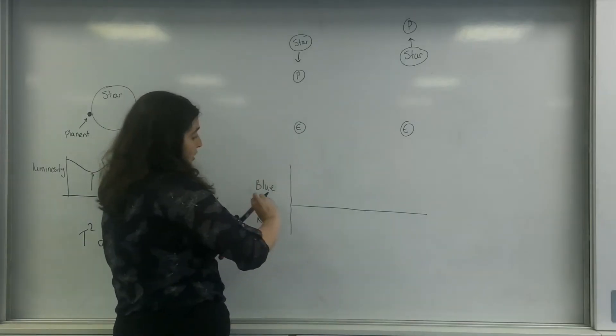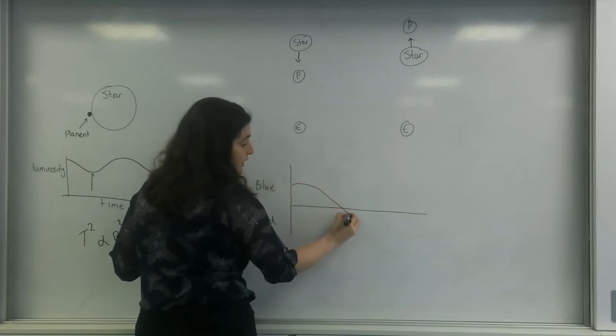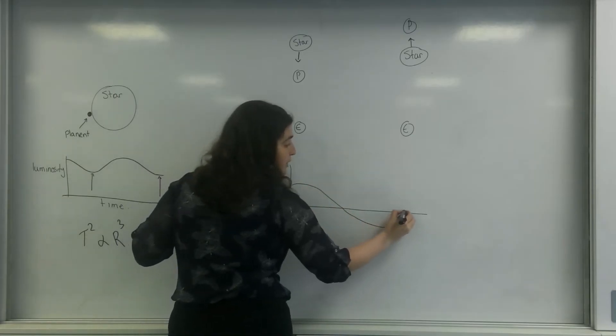So what we actually get is a graph that would look like this. It would be slightly blue shifted here, then we go down to its normal spectra, and then it would be slightly redshifted, and then go back up again.